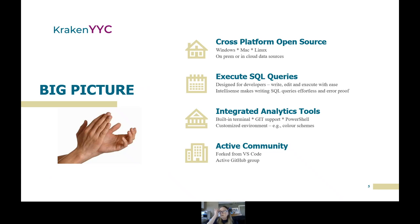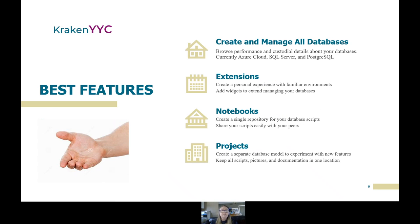There are about 300 or 400 branches. All you have to do is go to the GitHub page and you'll be able to download it. The best features are that you can create and manage all of your databases. Even though it's open source and constantly being worked on, right now you can access Azure Cloud, SQL Server, and Postgres, with Redis and other data platforms coming down the road. Because this is forked from VS Code, you have many of the VS Code extensions, including creating personal environments and snippets you can send to the marketplace.